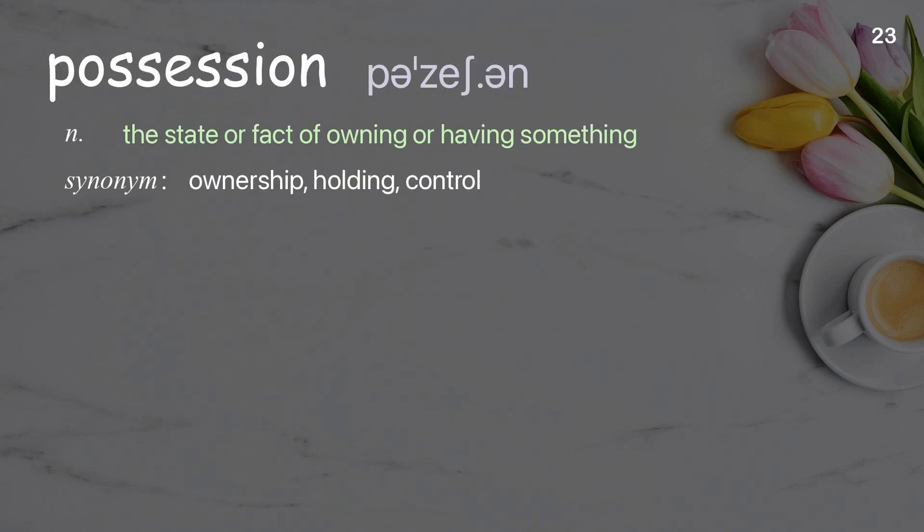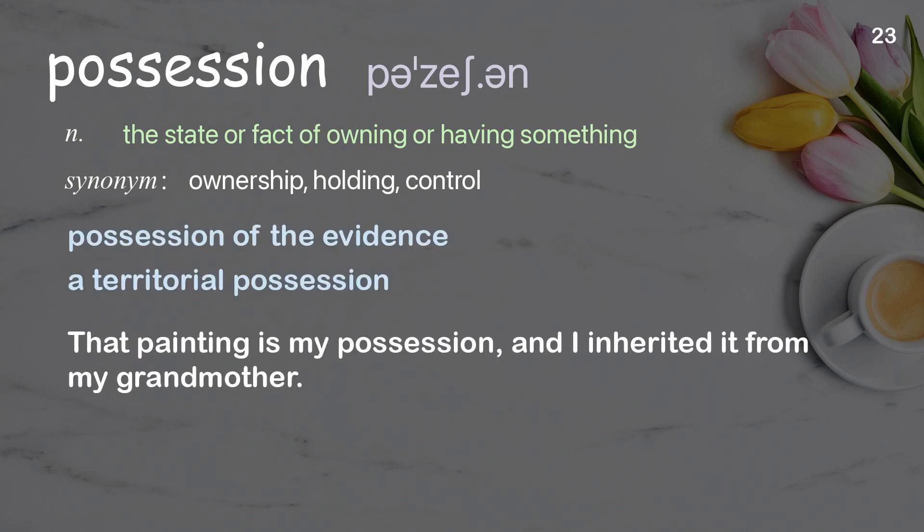Possession: the state or fact of owning or having something. Examples: possession of the evidence, a territorial possession. That painting is my possession, and I inherited it from my grandmother.